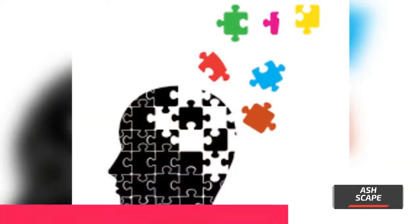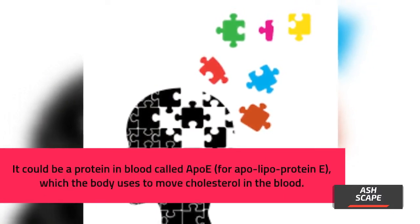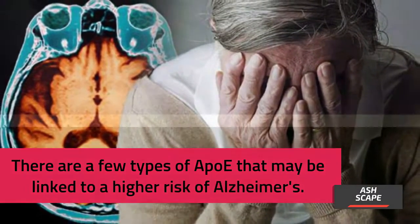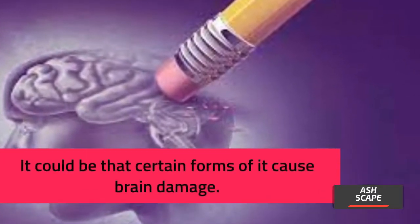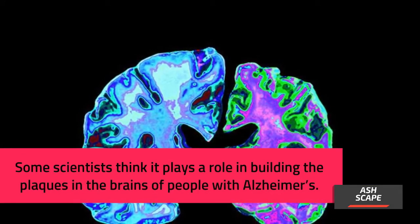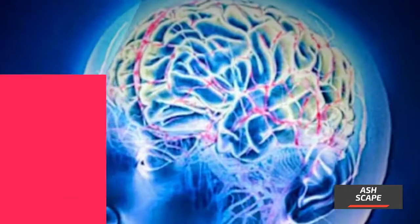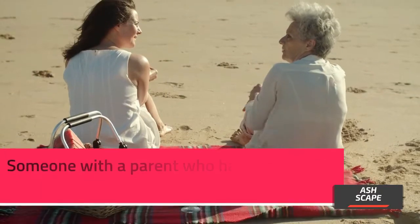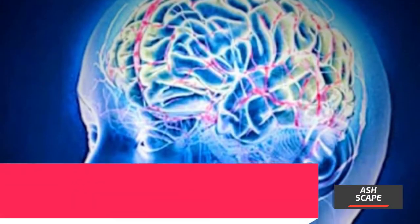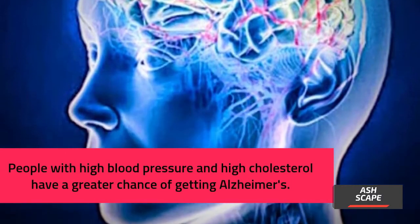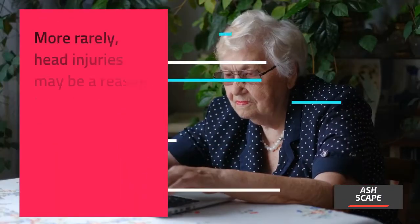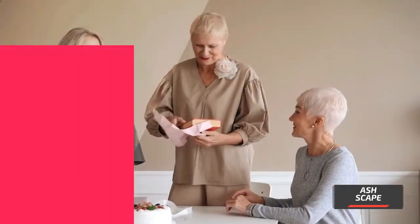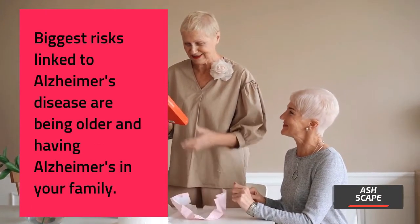Researchers aren't sure what causes this damage or how it happens. It could involve a protein in blood called apolipoprotein E (APOE), which the body uses to move cholesterol in the blood — certain forms may be linked to a higher risk of Alzheimer's. Genes almost certainly play a role; someone with a parent who had the disease is more likely to develop it. People with high blood pressure and high cholesterol have a greater chance of getting Alzheimer's. More rarely, head injuries may be a risk factor — the more severe they are, the greater the risk of Alzheimer's later in life.